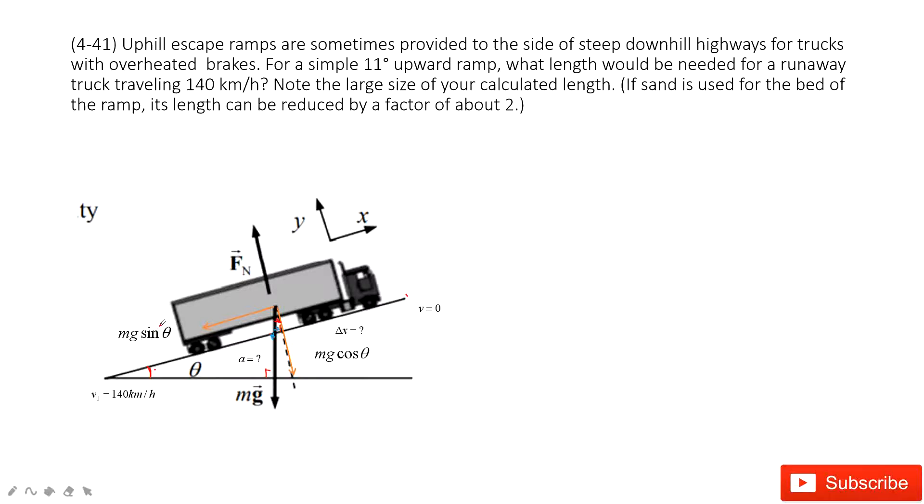Now we look at Newton's second law. To write Newton's second law, we know the net force equals mass times acceleration. Look at the y-direction: we have Fn minus mg cos θ. We can see for this truck there is no motion in the y-direction because it does not jump up and down. So this acceleration is zero. At y-component, it is stationary. Then we look at the x-component: the force there is minus mg sin θ, because this one is pointing to the negative x-direction, equals the mass times acceleration.